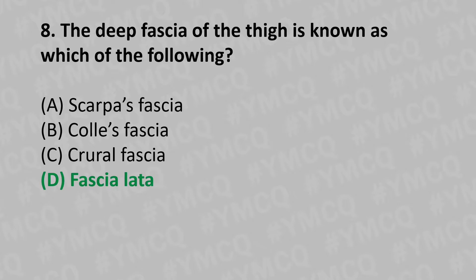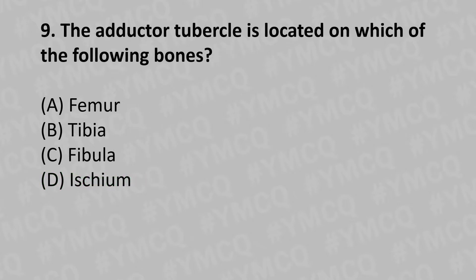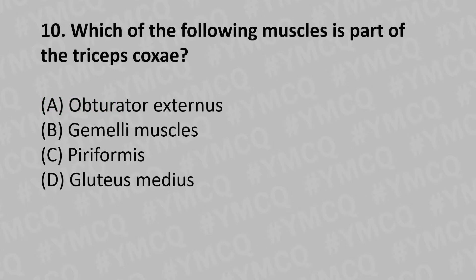Moving to our ninth question: the adductor tubercle is located on which of the following bones? Option A: femur, Option B: fibula, Option C: tibia, Option D: ischium. And the answer is Option A: femur.